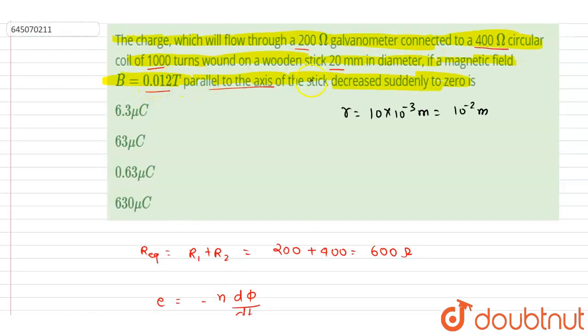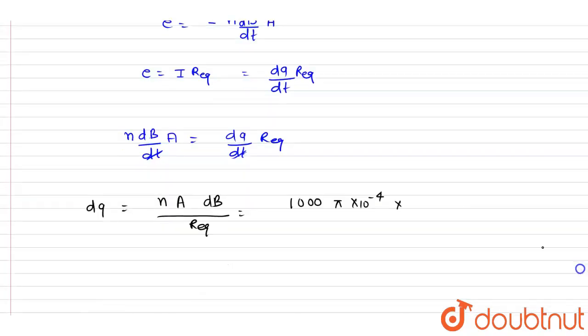So the change is simply 0.012 tesla. In division, R equivalent is 600. So these two zeros we can cancel out, and if you see, this 6 will also get cancelled out.